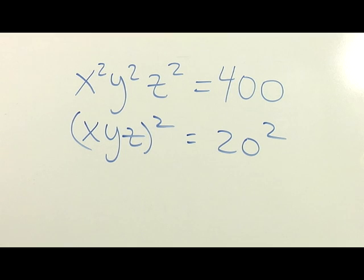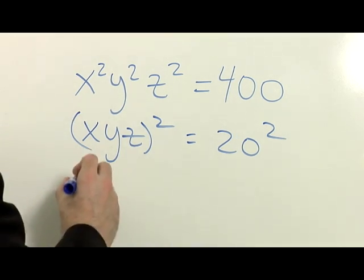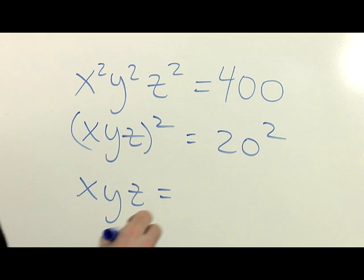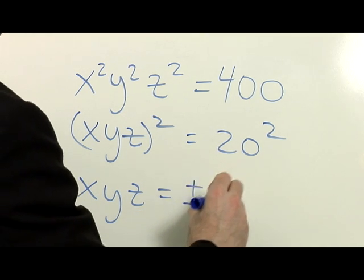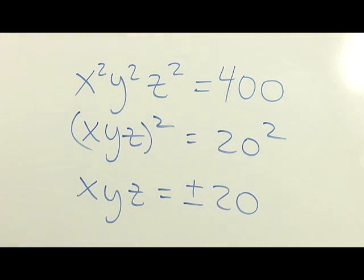By the square root property, x, y, z is equal to plus or minus 20. But we reject the negative solution.